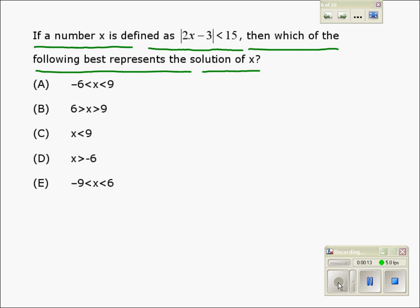We have the equation with an absolute sign 2x minus 3 is less than 15. If you notice, this term, 2x minus 3, is less than 15, or the same term is more than negative 15.